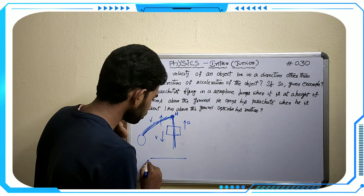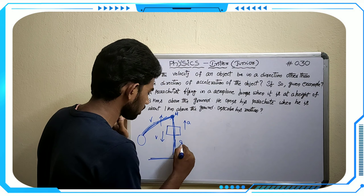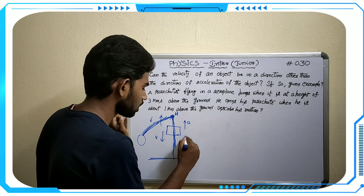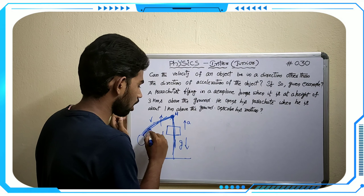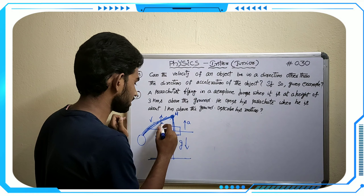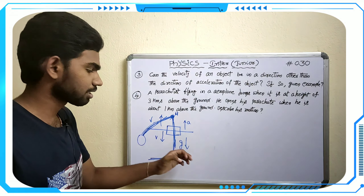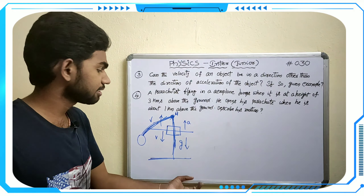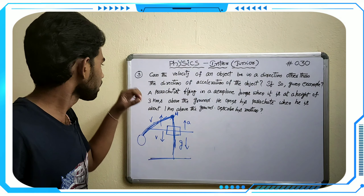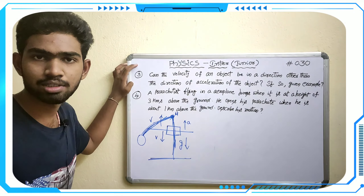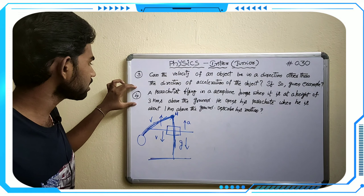So velocity is upward and acceleration due to gravity is downward. Gravity always pulls downward, so acceleration due to gravity acts downward, while velocity is upward — they are in opposite directions. This is the answer to the third question.